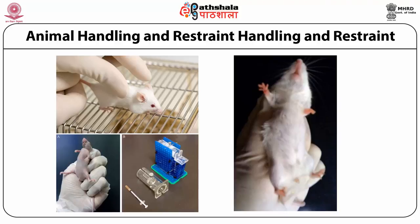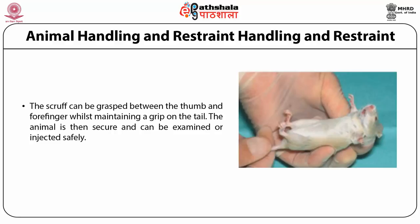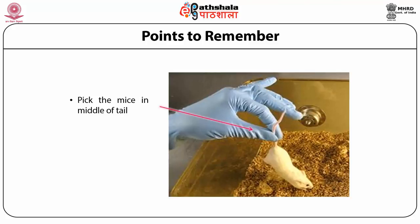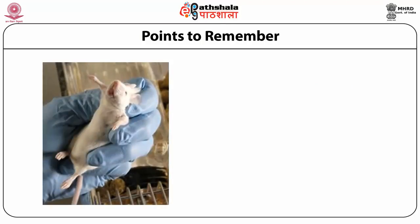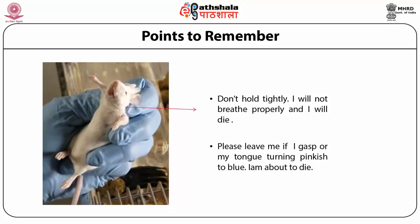If you don't handle the mouse properly, the animal will die. The mouse is grasped between the thumb and forefinger while maintaining a grip on the tail — the animal is then secure and can be examined or injected safely with no biting. Always pick the mouse at the middle of the tail, not the tip, or the tail skin can degloving. During holding, it is important to grip the scruff properly — if held too tightly the mouse cannot breathe and the tongue turns blue, leading to death.